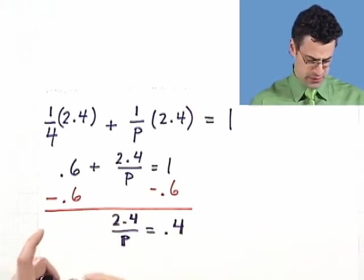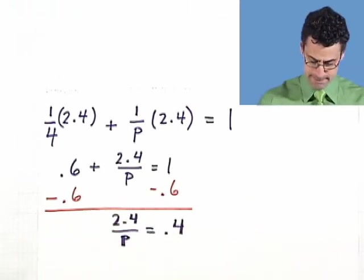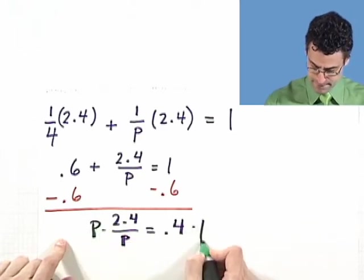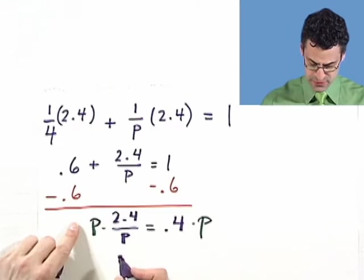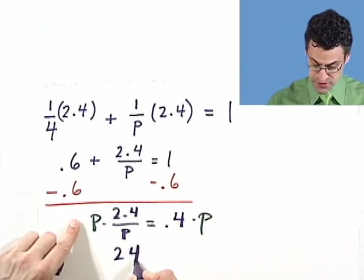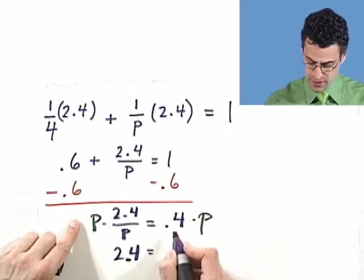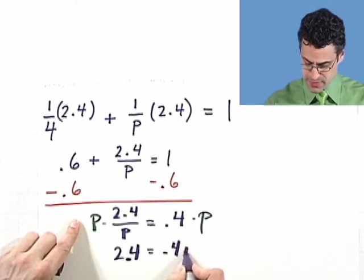And now I can multiply both sides through by P. And when I do that, the P simplify here. I'm just left with 2.4. I'm sorry, 2.4 equals 0.4 P.